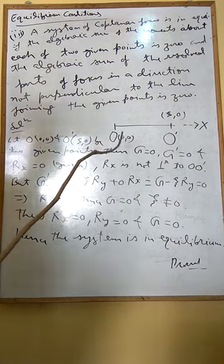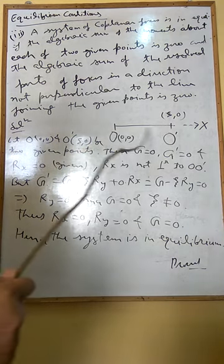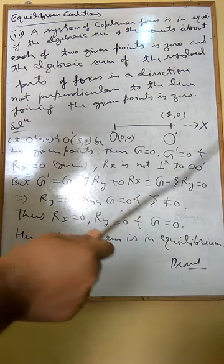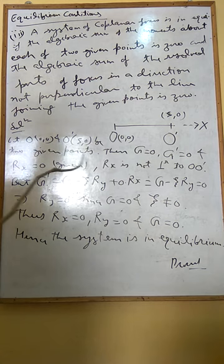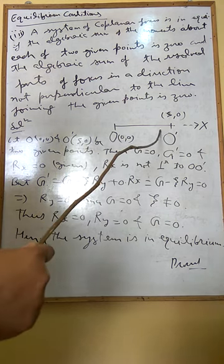Suppose the two given points are O(0,0) and O'(xi,0). This O' is in the direction along the x-axis. Then G will be zero along this, and G' is equal to zero along this, as per the given condition.